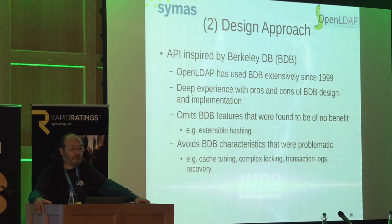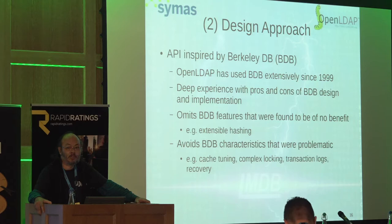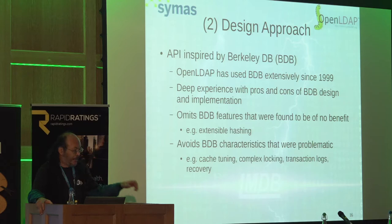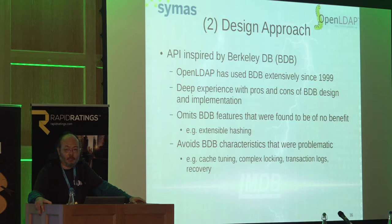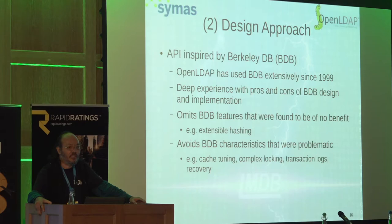So how did we get here? The API is based on the Berkeley DB API, which OpenLDAP has been using since 2000 or 2001. We stripped out a lot of things Berkeley does that we had no use for. Berkeley originally originated as a hash-based database and added B-trees in a later version. We found in heavy testing that B-trees scale better to larger data volumes — once your data set is larger than your physical RAM, extensible hashing just falls off a cliff.